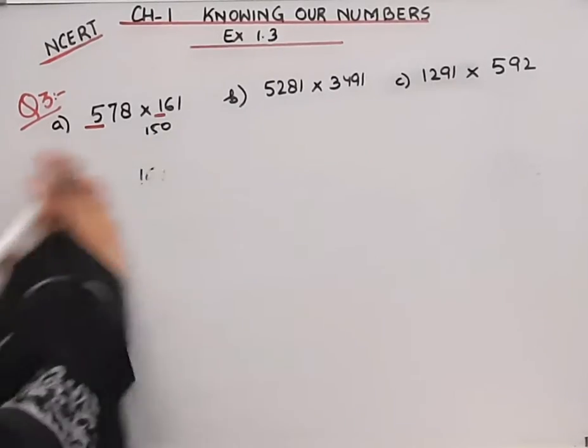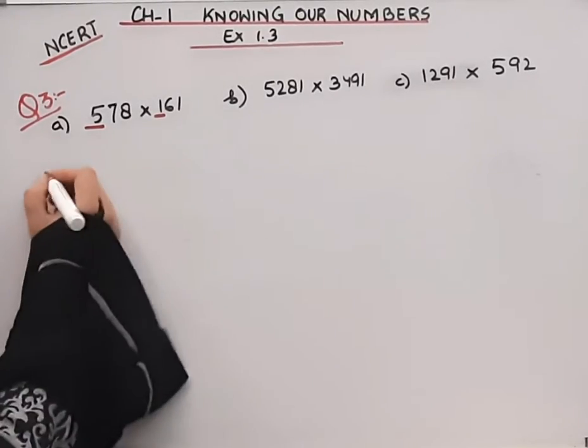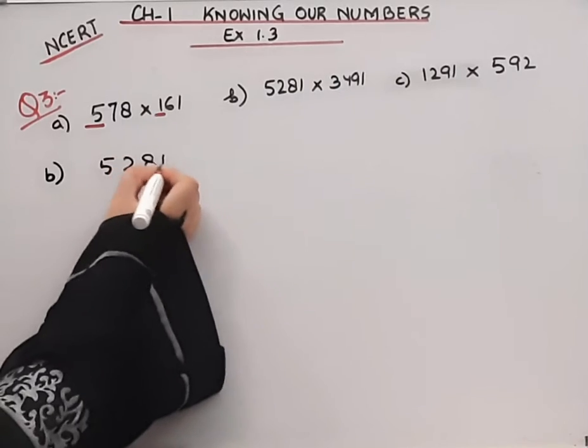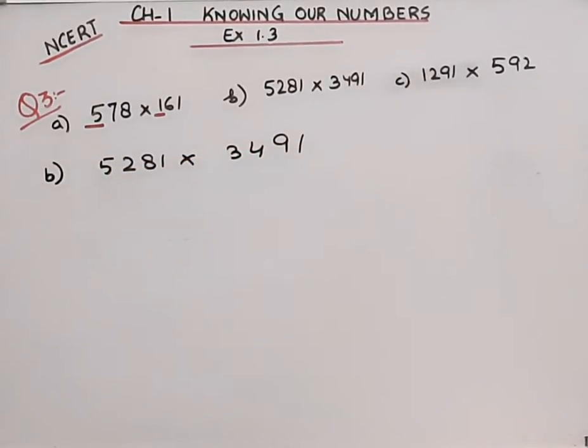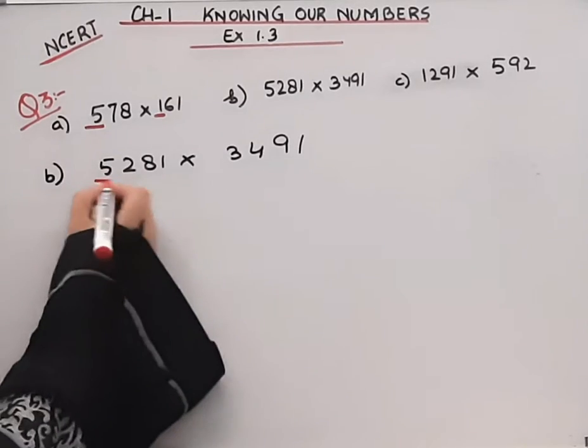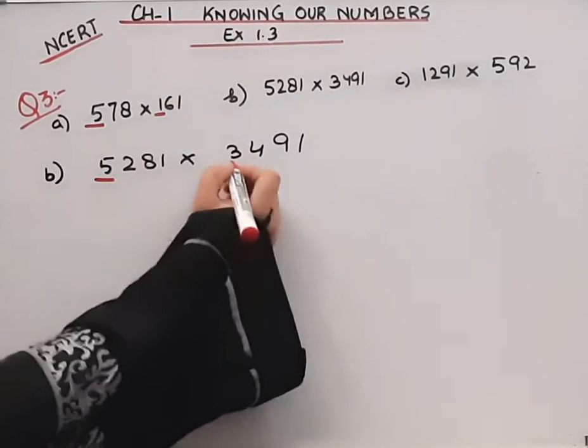Let's move on to the B part. B part, we have the number as 5281, 3491. What is the last digit? This is 5000, this is 3000.